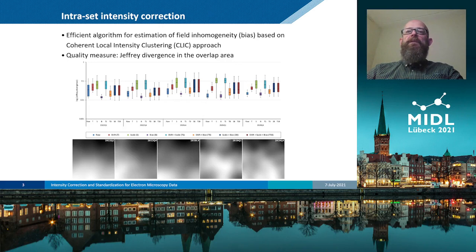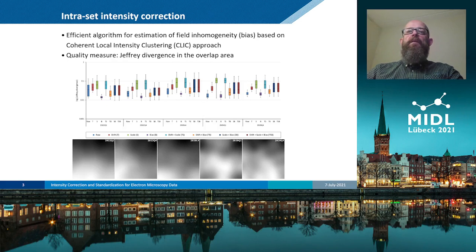We also analyzed an extended model that included intensity correction factors for each frame. However, such models showed somewhat poor performance compared to the simplified model with bias correction only. One possible explanation for this result might be the relatively small size of the selected region.